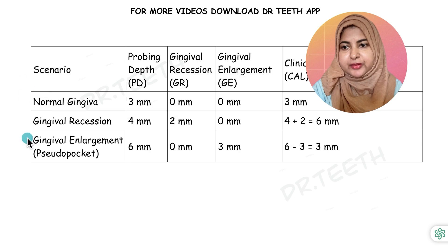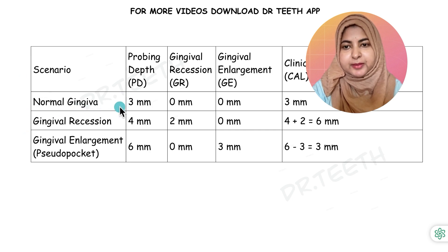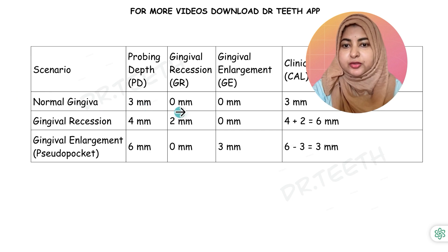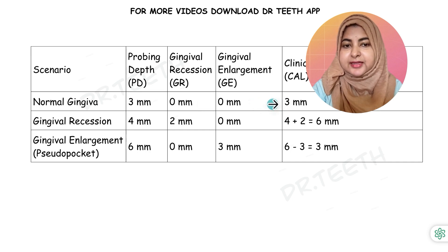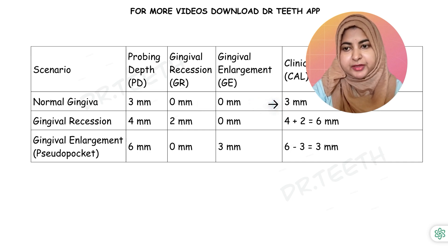Here are a few examples. Let's suppose we have normal gingiva and the probing depth was 3 mm. There is no gingival recession or gingival enlargement. So in that case the CAL will be 3 mm.